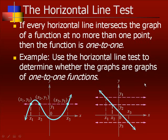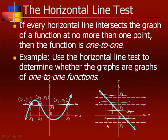We have a horizontal line test to see if a function is one to one. It says if every horizontal line intersects the graph of a function at no more than one point, then the function is one to one. For example, if you drew a horizontal line through the first graph, you notice you have three different x values — x₁, x₂, and x₃ — that all have the same y value, so that is not one to one. Whereas over here, every horizontal line will touch the graph in at most one spot, so that one is one to one.